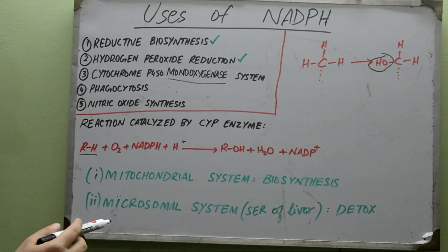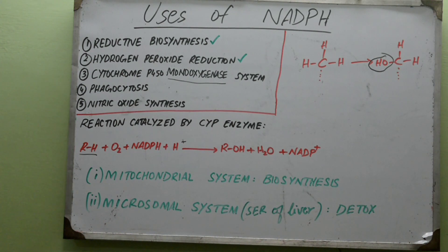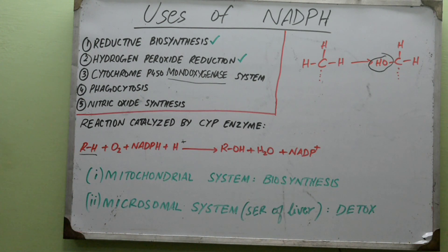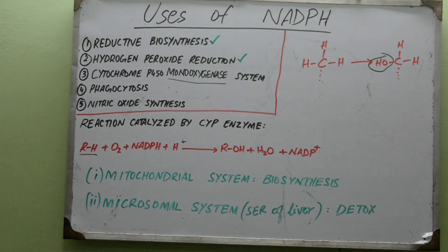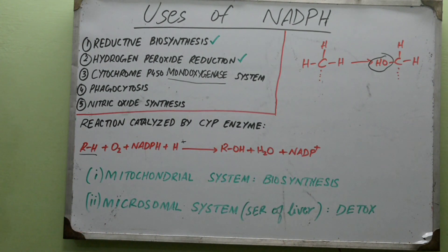There are two types of monooxygenases. The first type is the mitochondrial system, which is related to the reductive biosynthesis of steroids and hormones — for example, in steroidal synthesis in the gonads. It is also helpful in bile acid synthesis in the liver, as well as the production of vitamin D3: the primitive vitamin D3 needs to be hydroxylated first in the liver to 25-hydroxycholecalciferol, and then in the kidney to 1,25-dihydroxycholecalciferol.